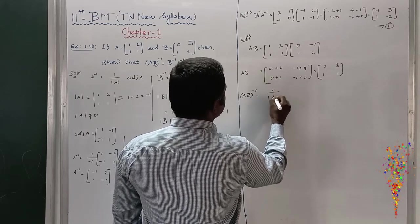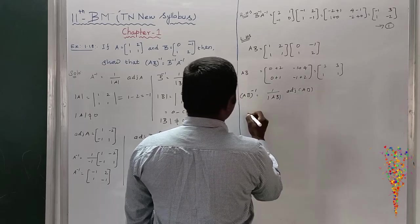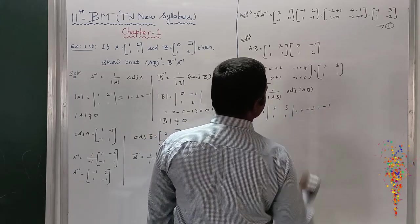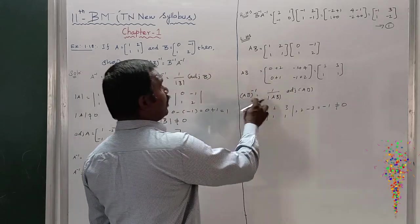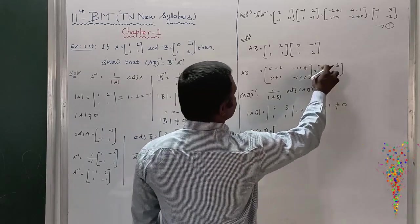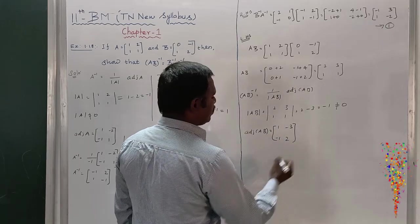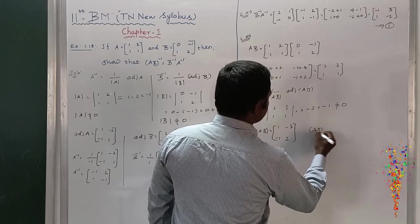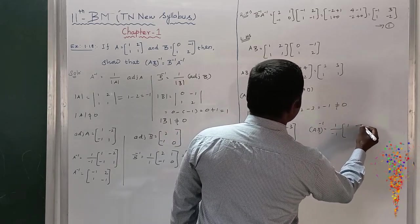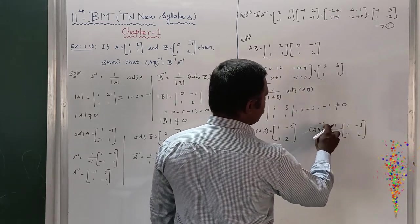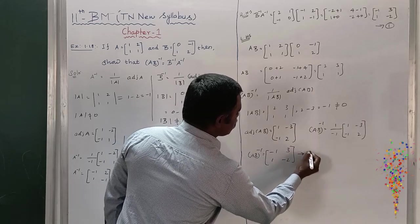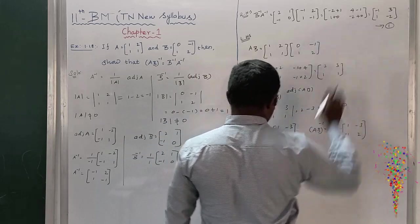So (AB) inverse equals 1 by modulus of AB into adjoint of AB. Modulus of AB: 2×1 minus 3×1 equals minus 1, which does not equal 0, so (AB) inverse exists. Adjoint of AB: interchange the diagonal terms [2, 1] and change signs of off-diagonal to get [-3, -1]. Therefore (AB) inverse equals (1 by minus 1) into [1, -3; -1, 2], which gives [-1, 3; 1, -2]. This is equation number 2.